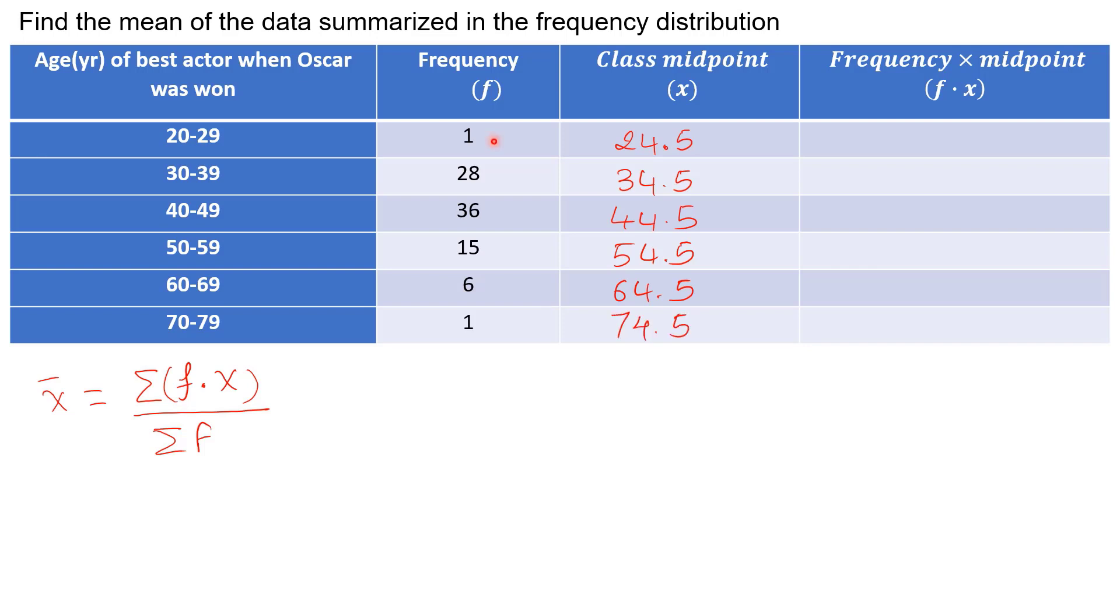Next step, multiply frequency times the class midpoint. That will be placed right here. So we get 24.5, next one 966.0, next one 1602.0, 817.5, 387.0.